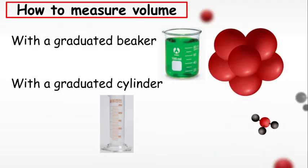How to measure volume. We measured volume this year using a graduated beaker or a graduated cylinder. And what does graduated mean? That just means that it measures, it marks on the beaker and the cylinder, the number of milliliters in that beaker or cylinder. So it's graduated by the number of milliliters.